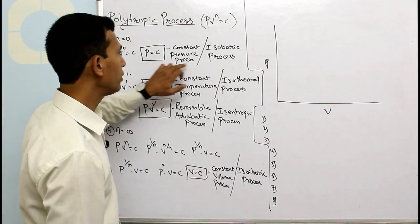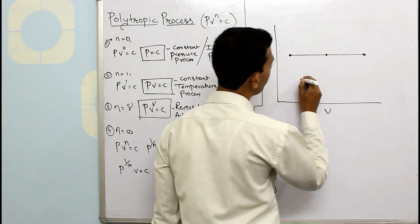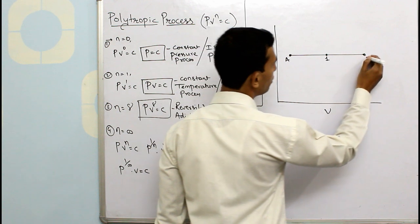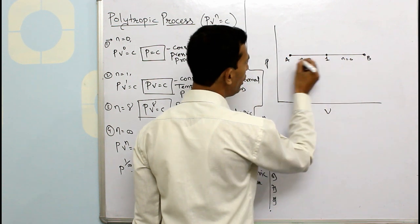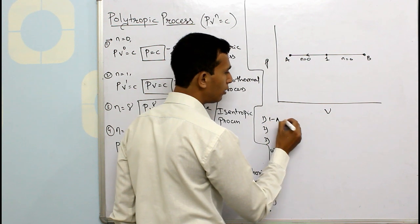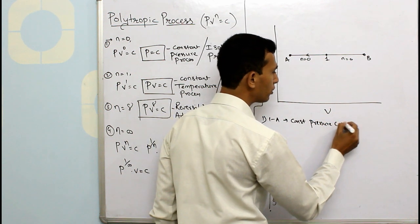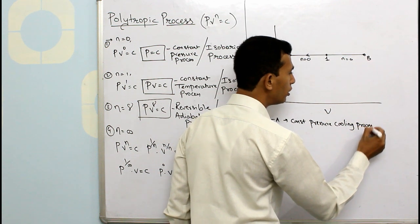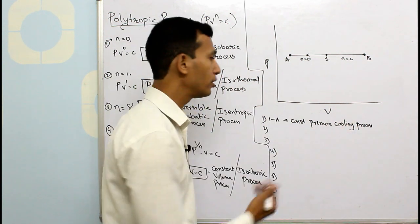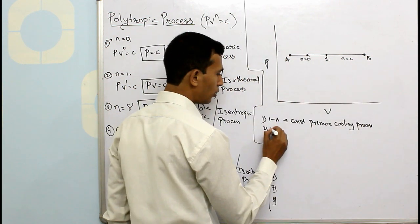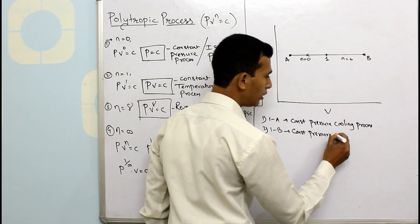For n equals to 0, that is the constant pressure process, you have a horizontal line. Let us say the initial point is 1, with point A to the left and point B to the right. From 1 to A is the constant pressure cooling process, because the volume is getting reduced on cooling. From 1 to B is the constant pressure heating process.